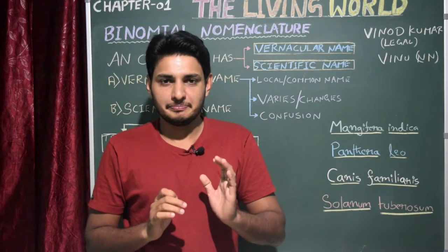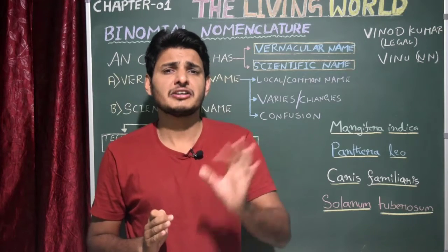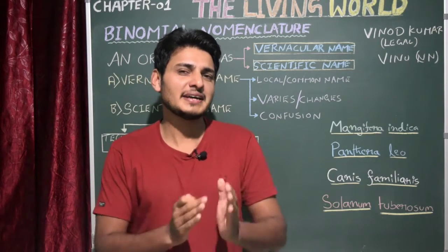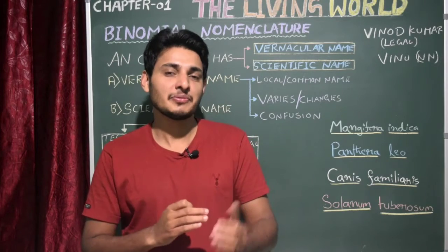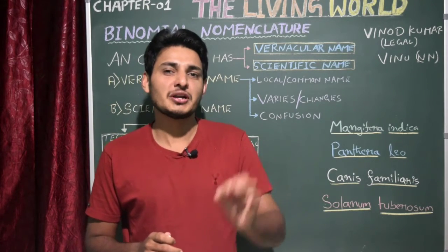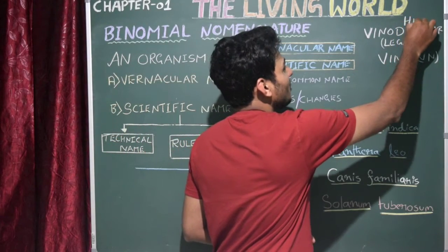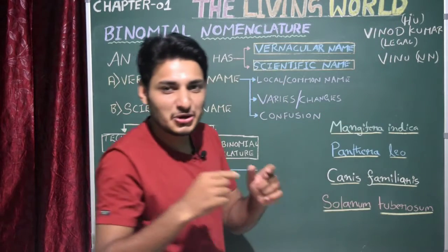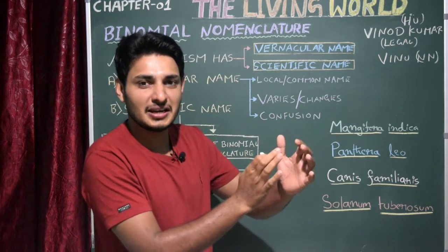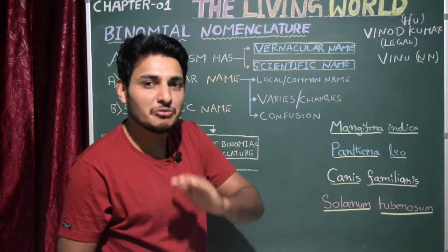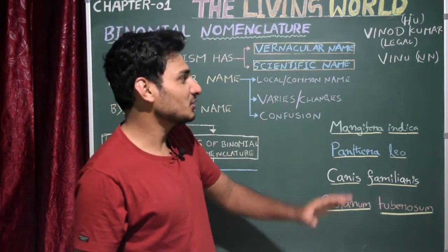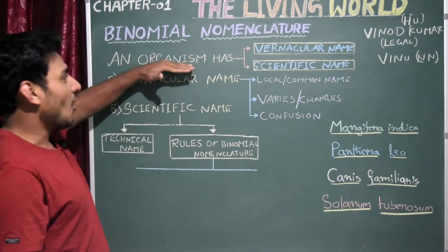Let's take one more example. The scientific name of the tiger is Panthera tigris. If you go to Tamil Nadu, people speak Tamil and they call the tiger as 'Puli'. In Hindi, tiger is called 'Baagh'. In Urdu, tiger is called 'Sher'. If you go to China, the same tiger is called 'Hu'. So in Tamil it's Puli, in Kannada it's Huli — you can see how the name of the same organism changes as we move from one geographical area to another.